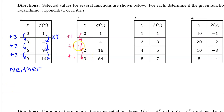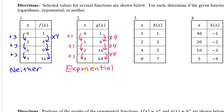For number two, g of x has equally spaced input values, so it's not going to be logarithmic. Let's check if the output values show a common ratio, because that would mean exponential. Dividing each output value by the previous: 4 divided by 1 is 4, 16 divided by 4 is 4, and 64 divided by 16 is also 4. There is a common ratio, so g of x is exponential. We would justify this by saying: exponential because for equally spaced input values, the output values are proportional.